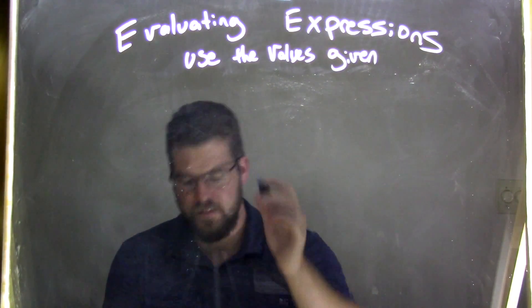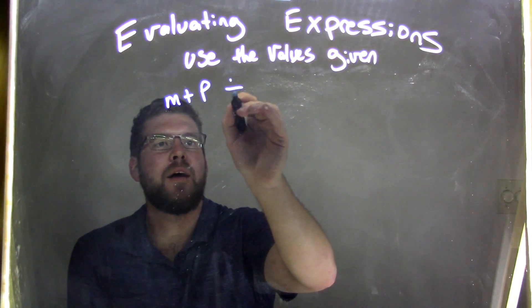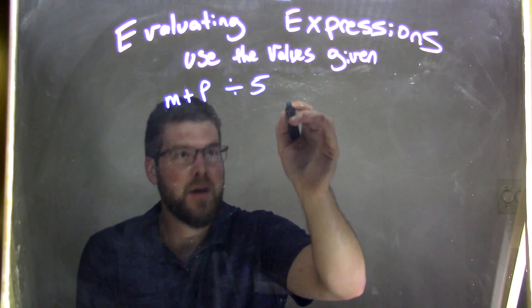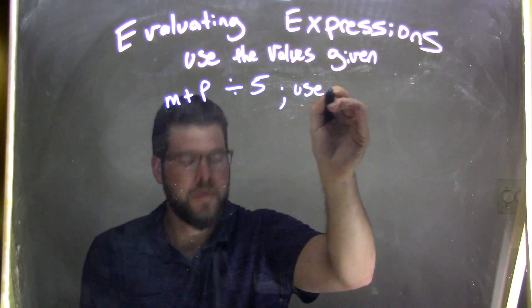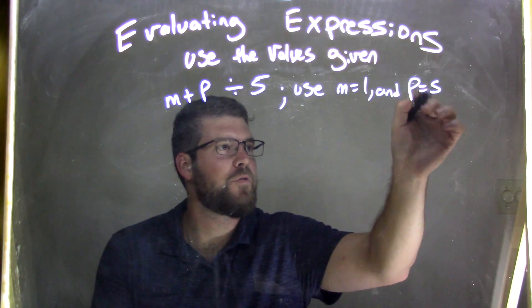So if I was given this expression, m plus p divided by 5, and I want to use m equals 1 and p equals 5.